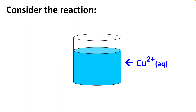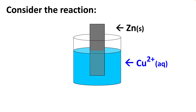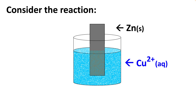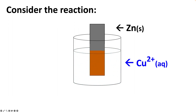Let's start by considering what happens when we have a beaker containing a solution of copper 2+ ions and we submerge a piece of zinc metal in that solution. Over time, what we see happen is a reddish-brown solid form on the surface of the zinc metal and the blue color of the solution that contained the copper 2+ ions fades.